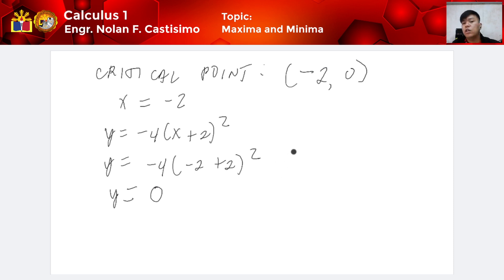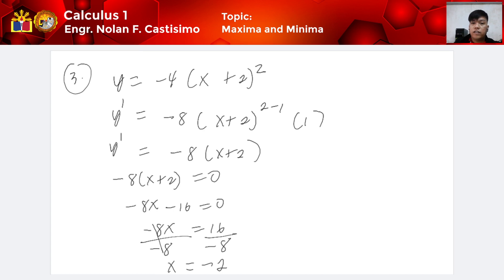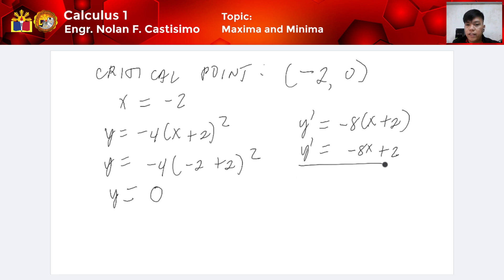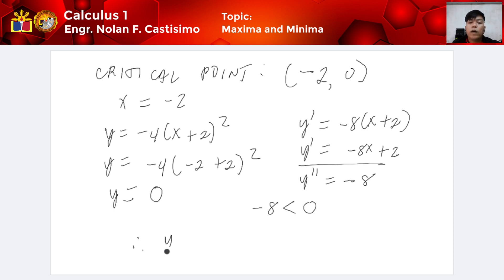We find the second derivative. The first derivative is y prime = negative 8(x + 2) or negative 8x plus 2. So y double prime is equivalent to negative 8, wherein negative 8 is less than 0. Therefore, y is a maximum.